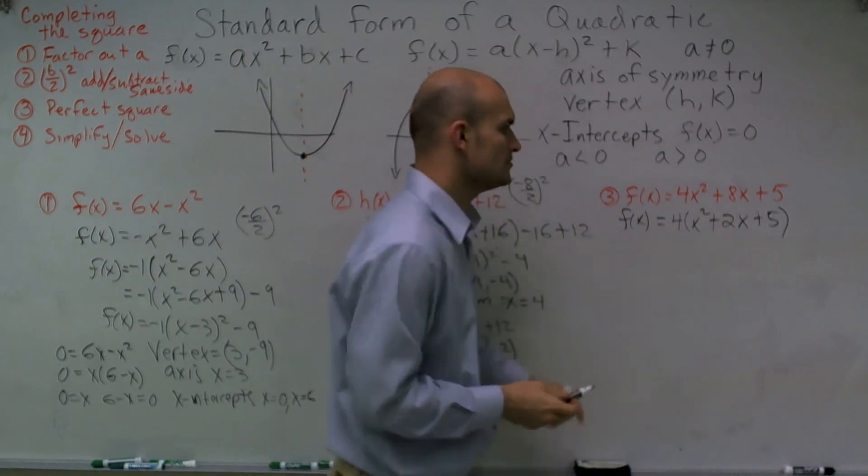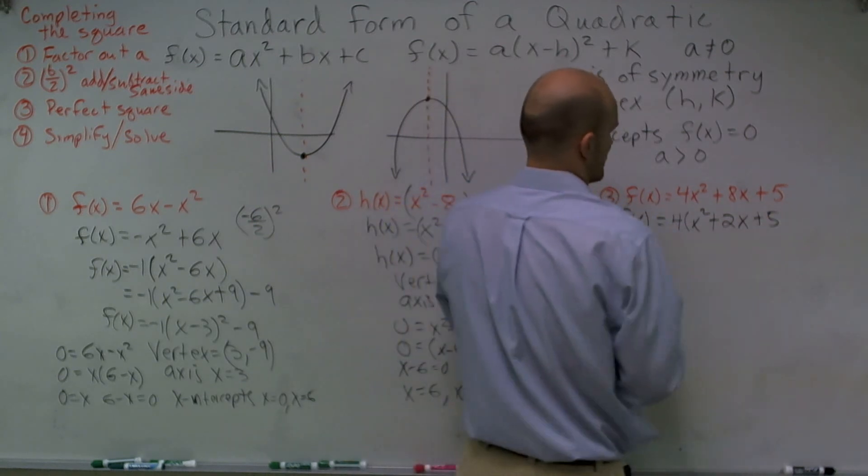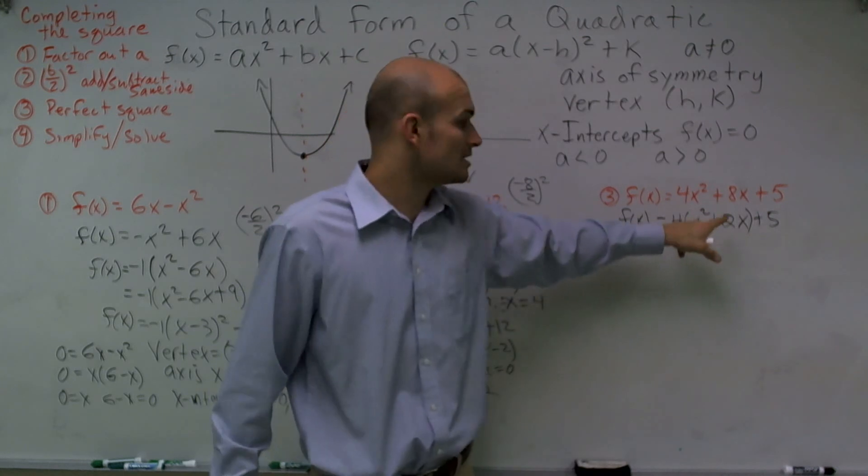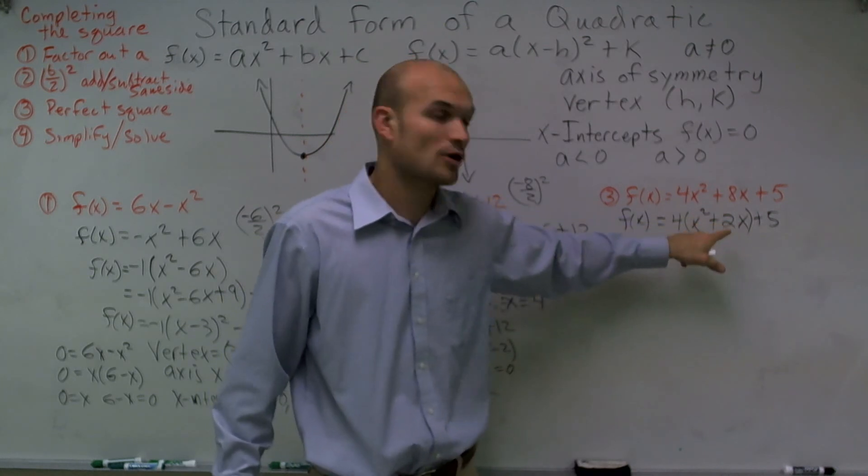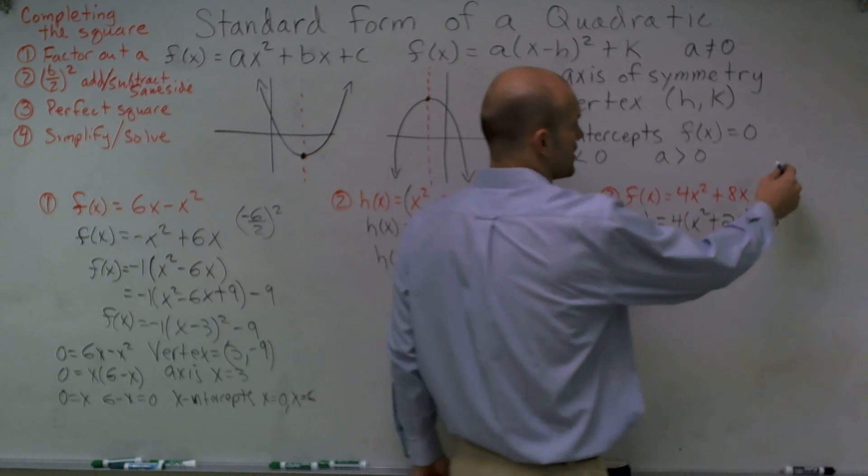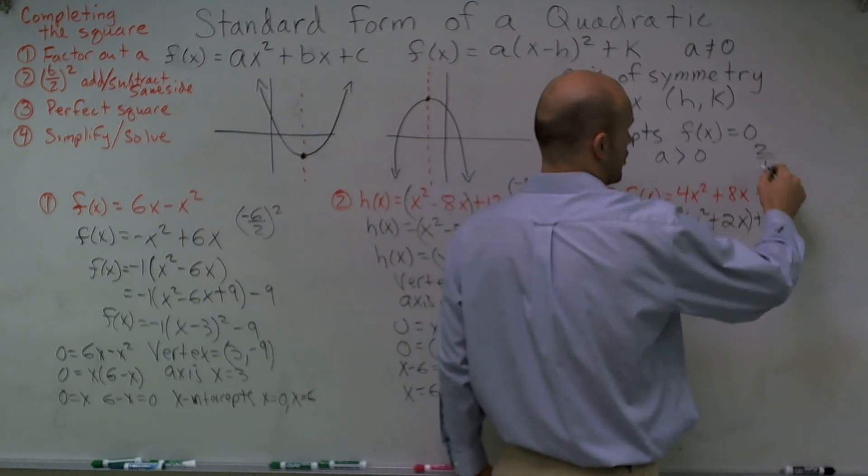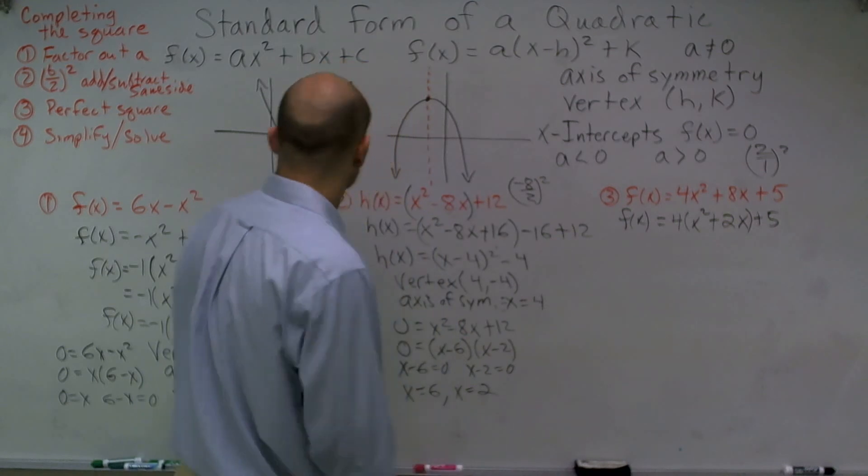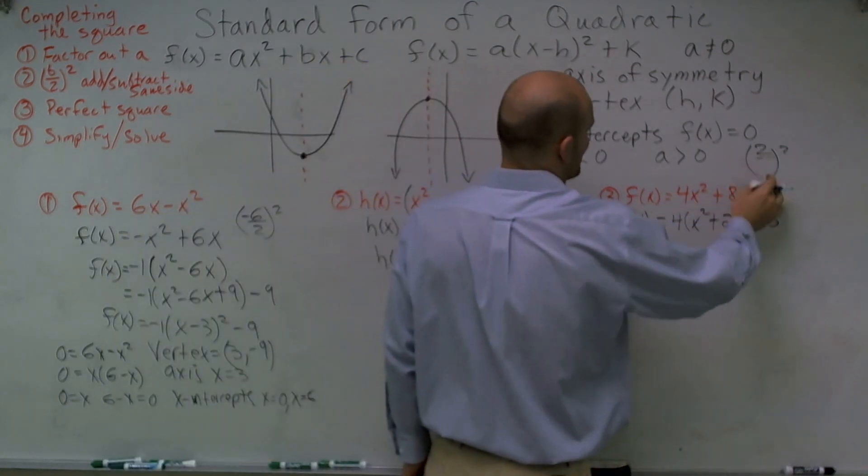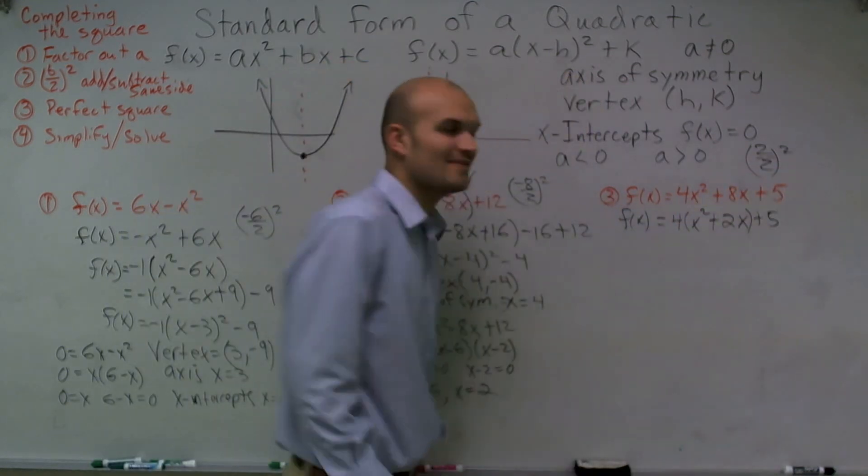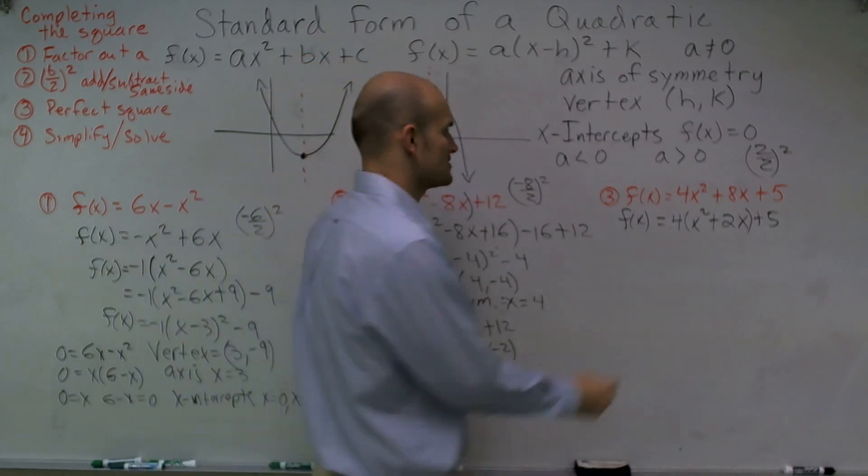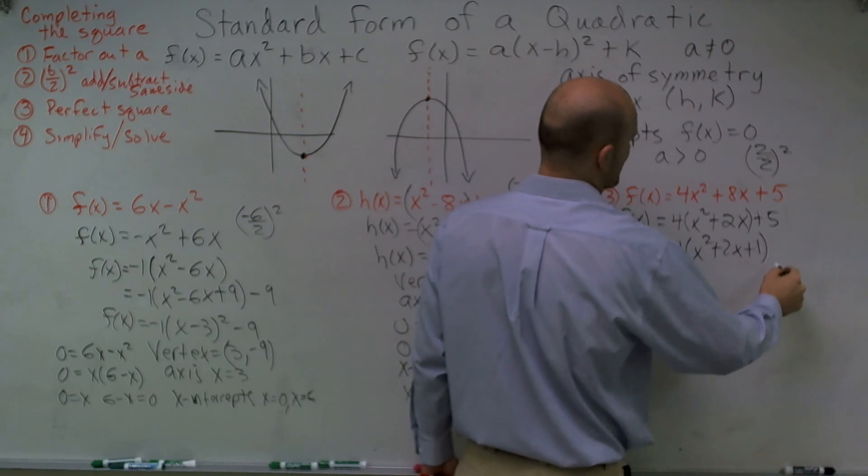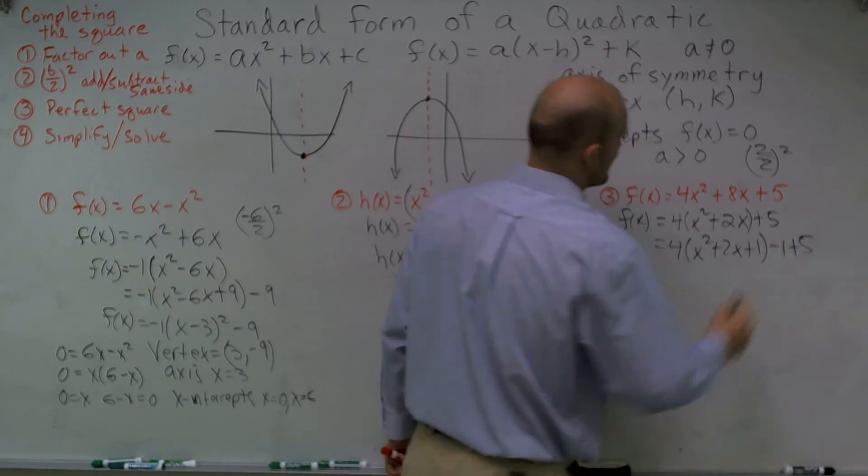Now, since I'm factoring the 4 out of the first two terms, now I can complete the square to make this a perfect square. So to complete the square, I'm going to take my b, which is 2, b divided by 2. So 2 divided by 2 squared. 2 divided by 2 is 1. 1 squared is 1.